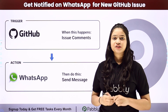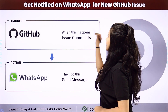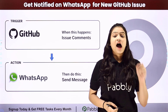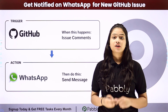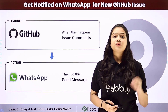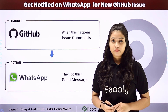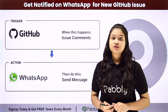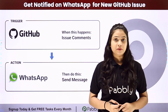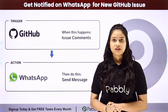Hello everyone. In this video, we are going to learn how to get notified on WhatsApp for new GitHub issues. Whenever a new issue is raised by a team member on GitHub, which is an amazing platform for software development, automatically a WhatsApp notification should be received by the admin. So how are we going to do this process automatically and effortlessly?